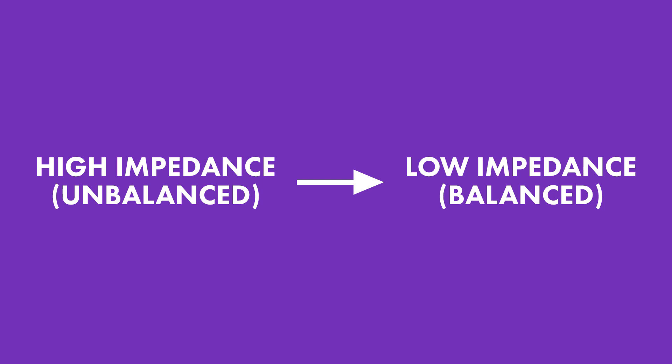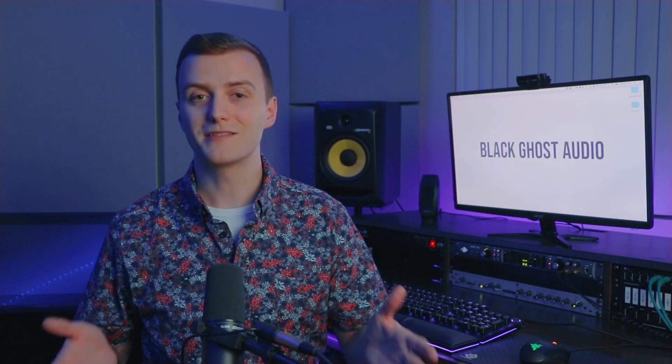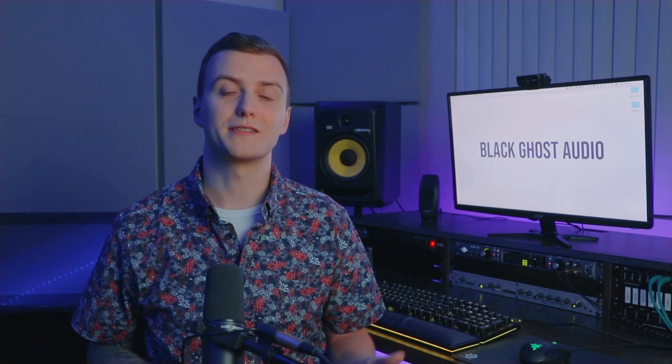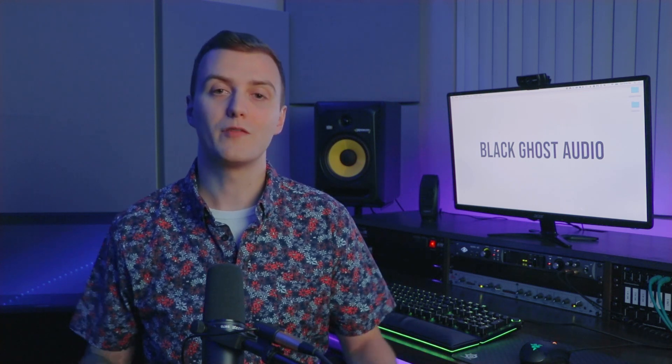You need a device that's going to provide a high impedance input and convert the incoming high impedance unbalanced signal into a low impedance balanced signal. Luckily, this is exactly what direct injection boxes — also commonly referred to as DI boxes — do. You plug your electric guitar or bass into the DI's input jack and it produces a low impedance mic level signal. You can then use a balanced XLR cable to run the signal over a significant distance without worrying about noise and process it just like you would any other mic level signal.